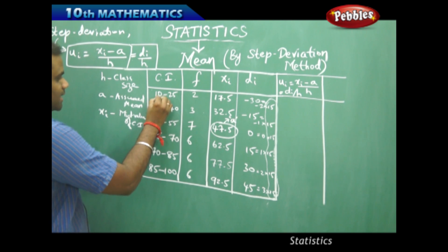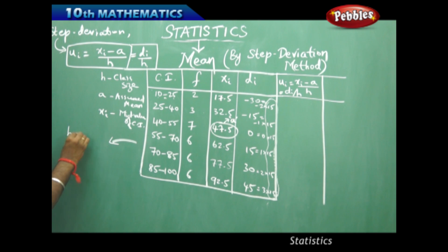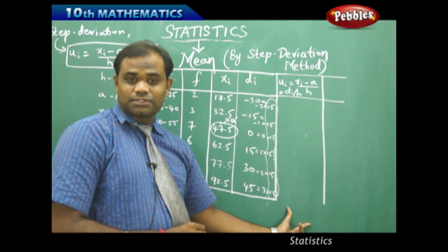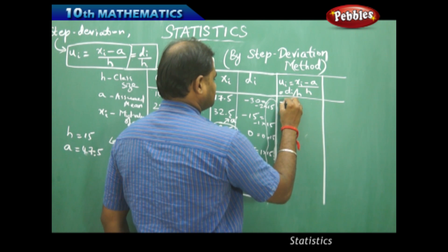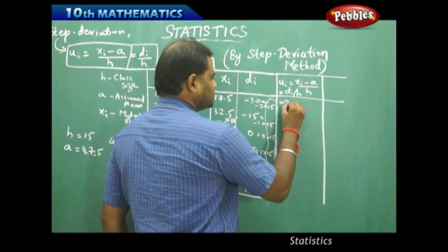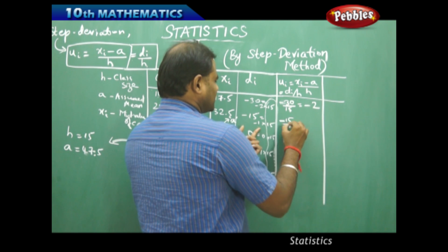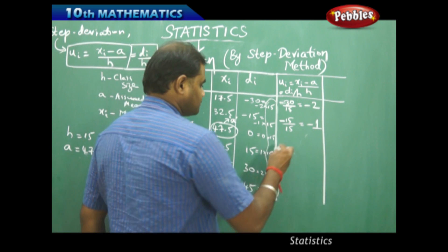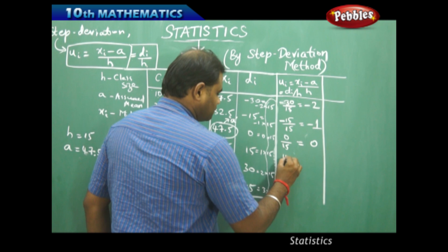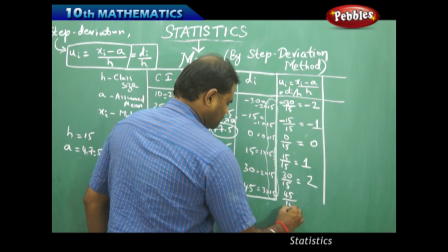The class size from 10 to 25 is 15 students in each group, so h = 15. The assumed mean a is 47.5. Calculating ui = Di / h: minus 30 divided by 15 gives minus 2; minus 15 divided by 15 gives minus 1; 0 divided by 15 gives 0; 15 divided by 15 gives 1; 30 divided by 15 gives 2; and 45 divided by 15 gives 3.